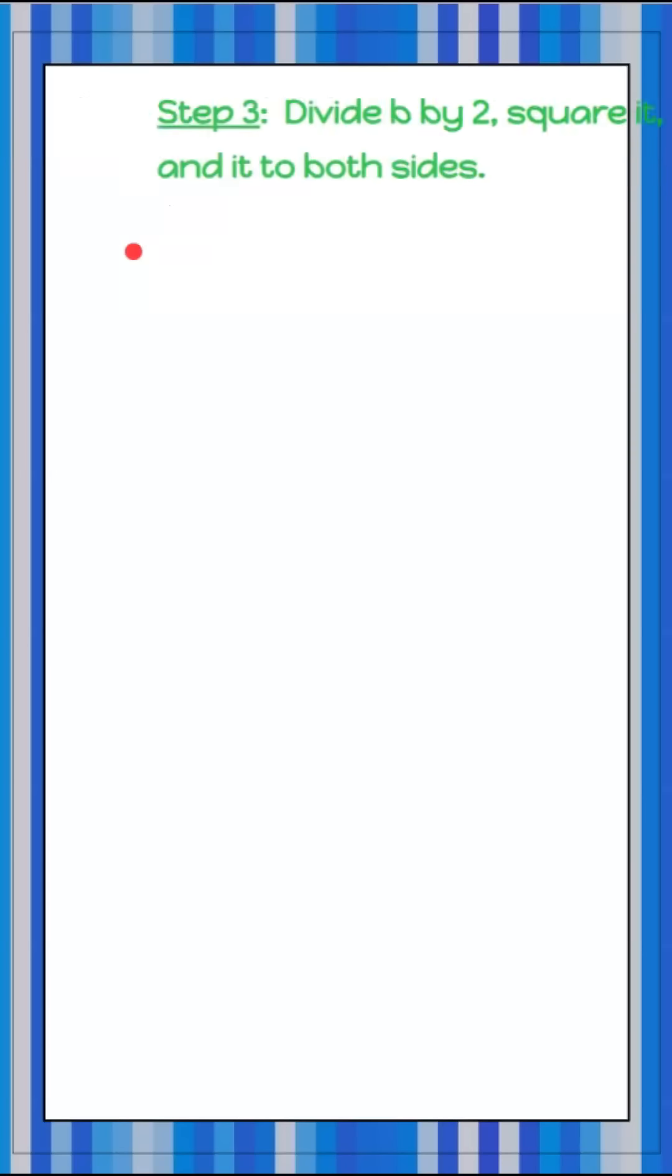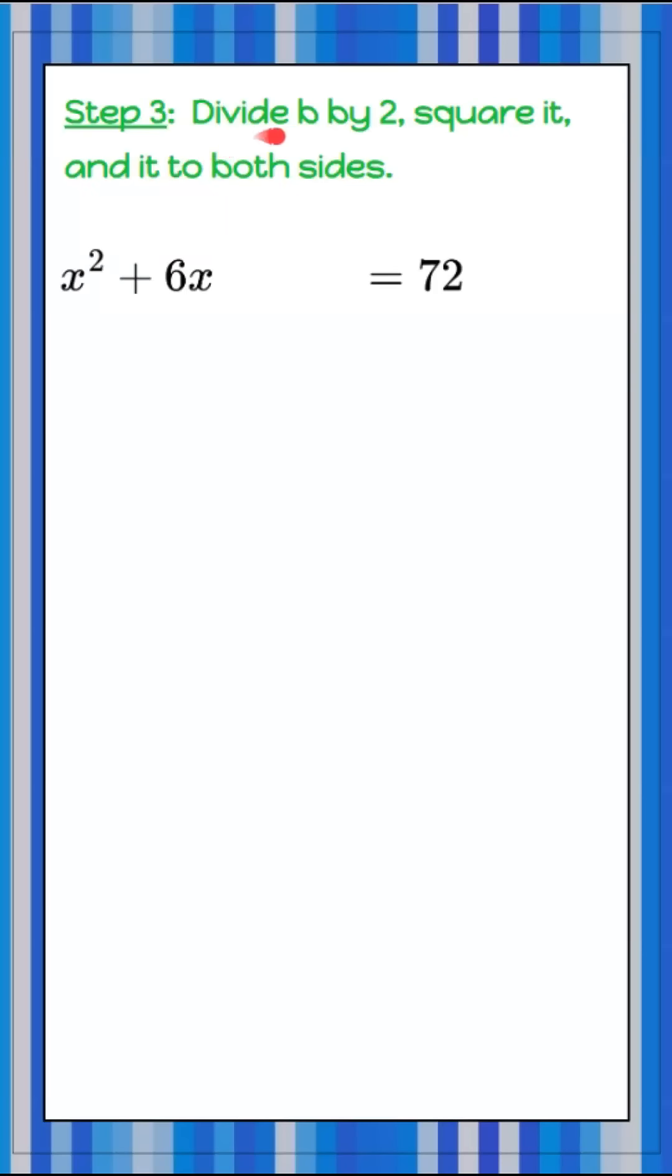So let's look at step three. Step three is to divide b by 2, square it, and add it to both sides. So I'm forcing perfect squares when I do this. So 6 is b, 6 divided by 2 and square it, and add that to both sides.